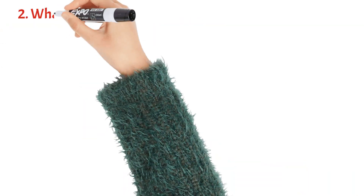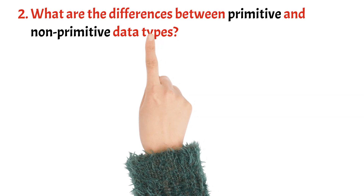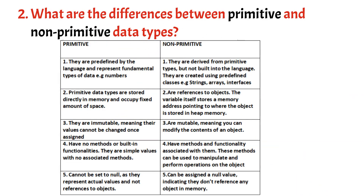What are the differences between primitive and non-primitive data types? A - Definition: Primitive data types are the basic building blocks of data in Java. They are predefined by the language and represent fundamental types of data, such as numbers, characters, and Boolean values. Examples include int, double, char, Boolean, etc. Non-primitive data types are derived from primitive types, but they are not built into the language. They are created using predefined classes or custom-defined classes. Examples include String, arrays, classes, interfaces, etc. B - Memory allocation: Primitive data types are stored directly in memory and typically occupy a fixed amount of space.